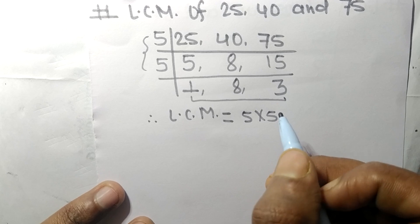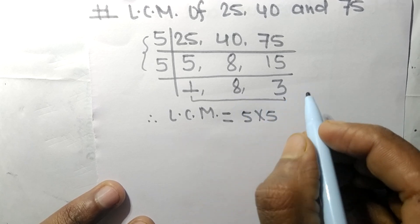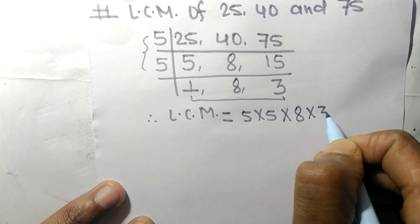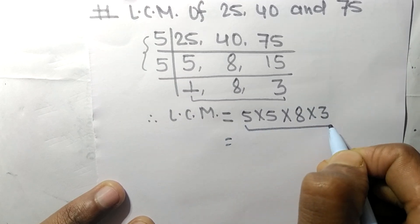And from this side we take the numbers greater than 1, that is 8 and 3, so multiplied by 8 and 3.